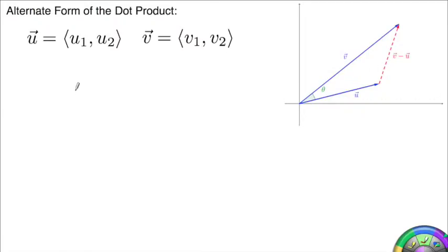Alright, so one vector I added in here was this vector, and it's literally v minus u. Now remember, when you do v minus u, you start your vector at u, and you end your vector at v. It's opposite direction.